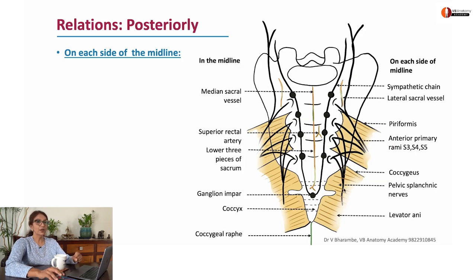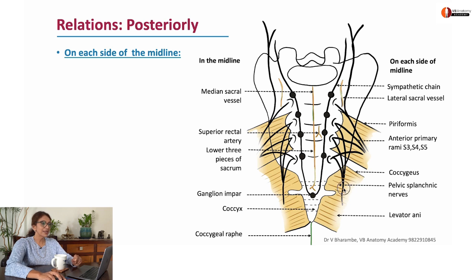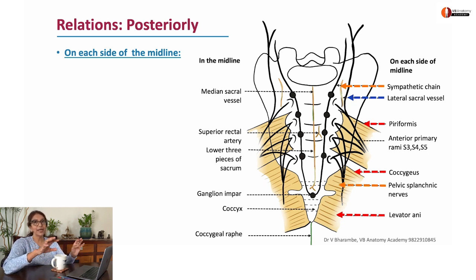On the sides, the rectum is related to muscles like piriformis, coccygeus, and levator ani, some blood vessels like the lateral sacral vessels, and important nerves — the sympathetic chain and the pelvic splanchnic nerves — which come and supply the rectum as well as the anal canal.